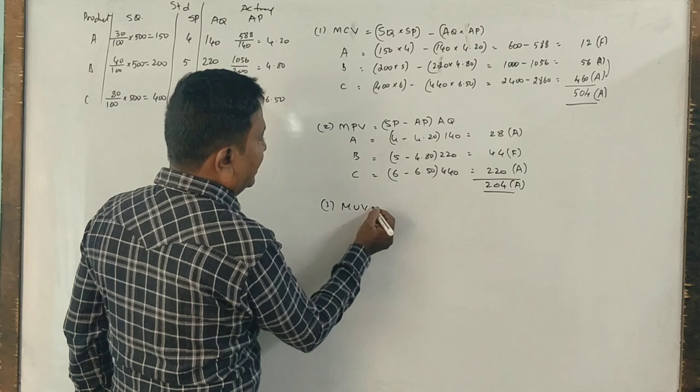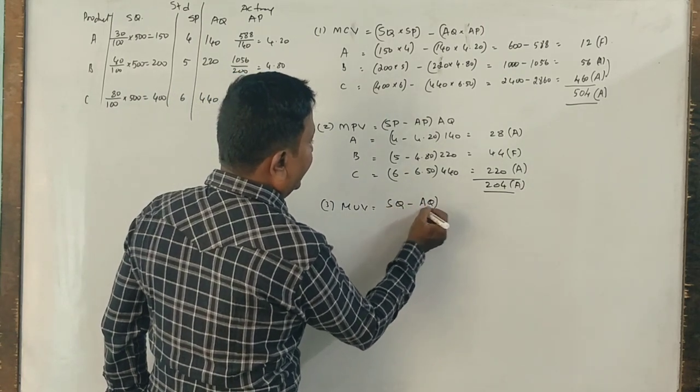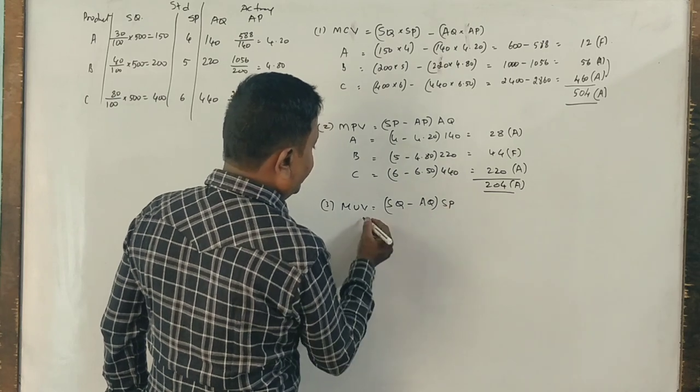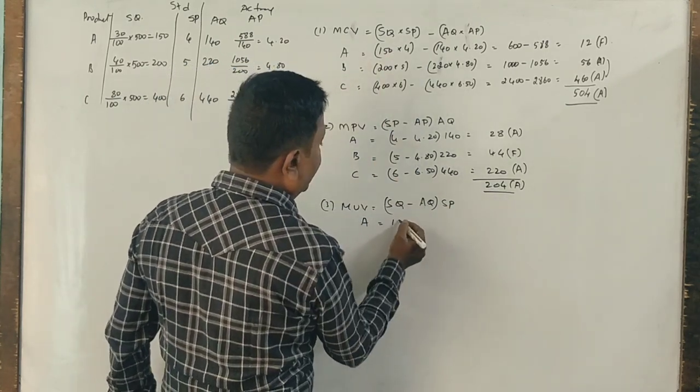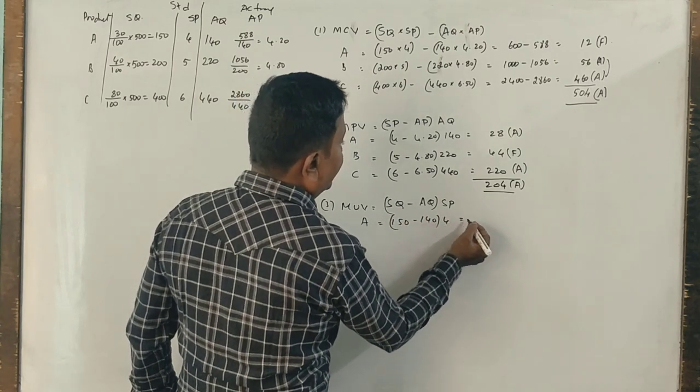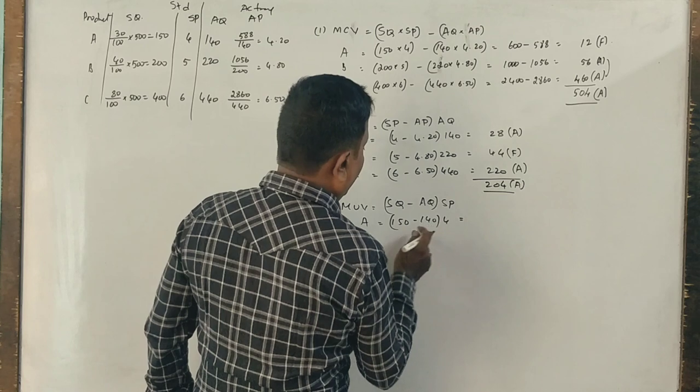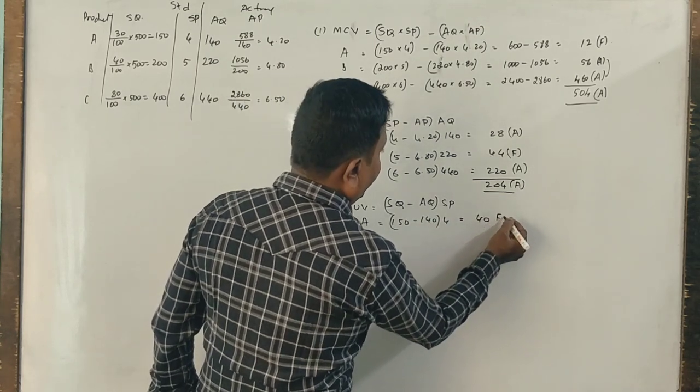Last one: material usage variance. Standard quantity minus actual quantity into standard price. A - what is the standard quantity? 150 minus 140, and 4 rupees is the standard price. 10 into 4 is 40 favorable.